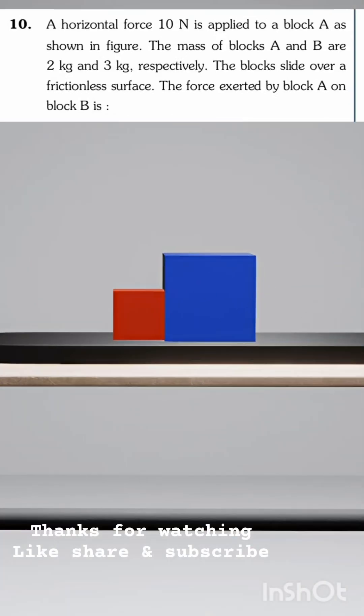In this example, there are two blocks A and B kept touching each other on the table, one of mass 2kg and another of mass 3kg. A force of 10N is applied to the 2kg block in the horizontal direction. We have to calculate the force exerted on block B by block A.